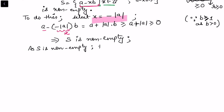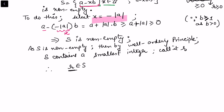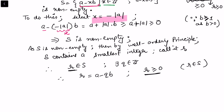Since S is non-empty, by the well-ordering principle, S contains a smallest element. Let us call this smallest element r. Since r ∈ S, there exists an integer q such that r = a − qb, and we have already shown that r ≥ 0 since r belongs to S. This proves the first part of the inequality: the remainder is greater than or equal to zero.